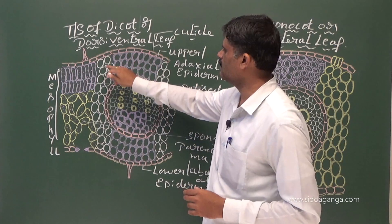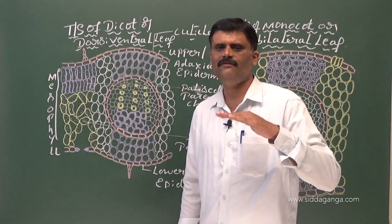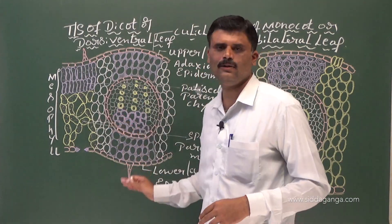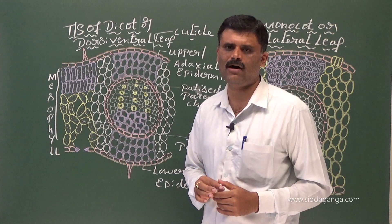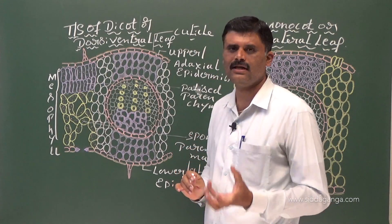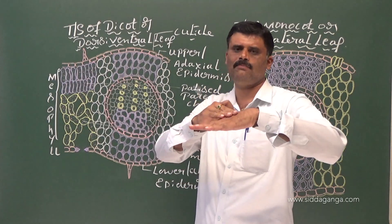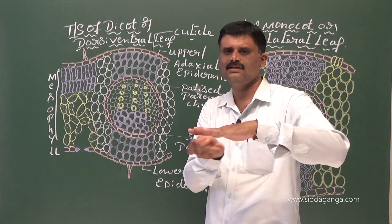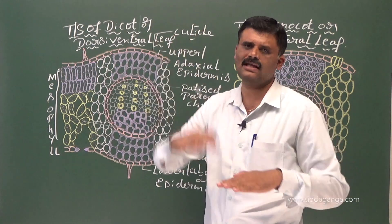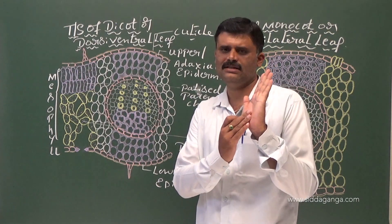The dicot leaf is also called a dorsiventral leaf. We can clearly differentiate the dorsal surface — the upper surface — and the lower surface, both anatomically and morphologically. The dorsal surface is the surface directly focused to sunlight, and the opposite side is called the ventral surface.